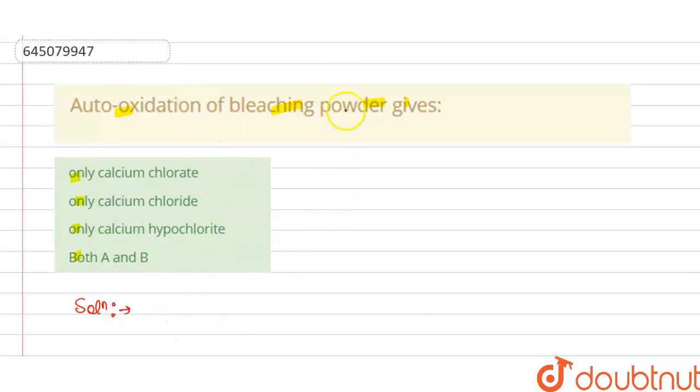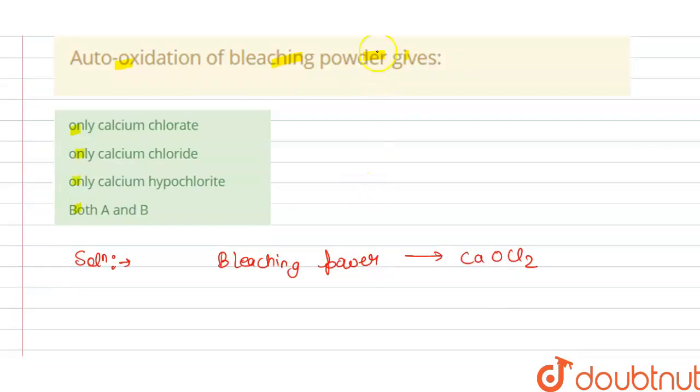The solution of this question is bleaching powder. We know that the chemical formula for bleaching powder is CaOCl2. We have given here auto-oxidation of bleaching powder gives, so we have to find the auto-oxidation products.